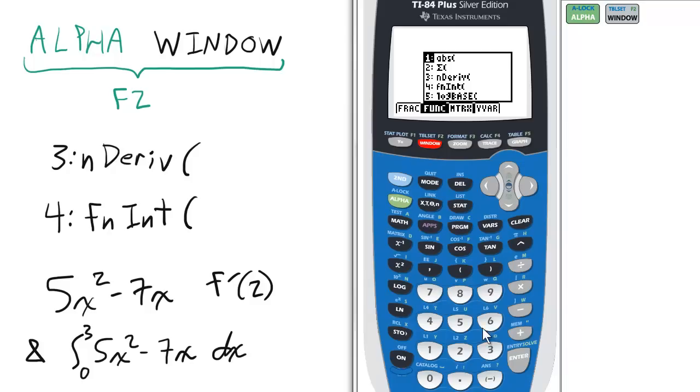First we'll do the derivative, which is option 3. And let's take the derivative of 5x squared minus 7x. So it's the derivative with respect to x.